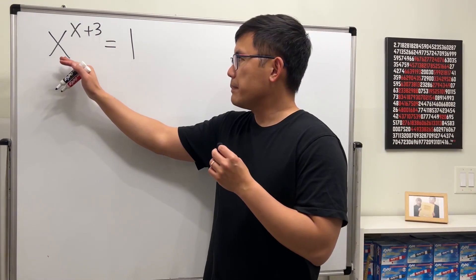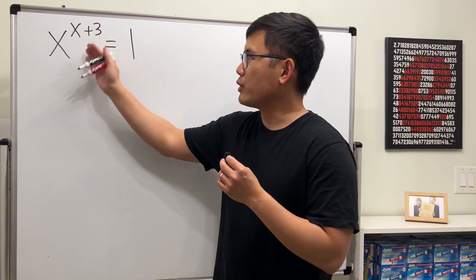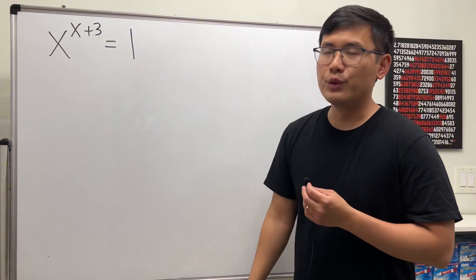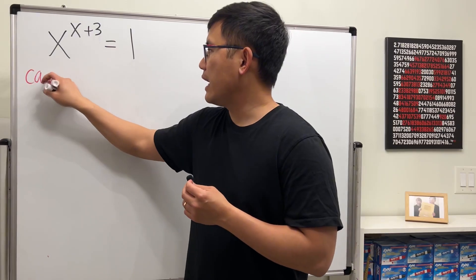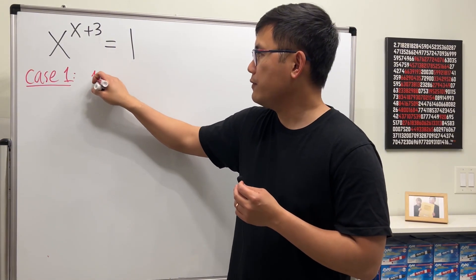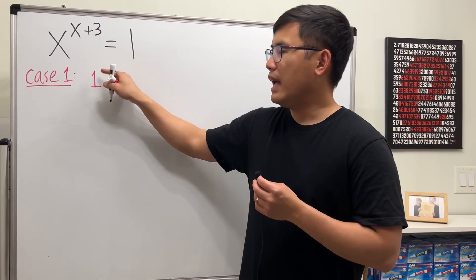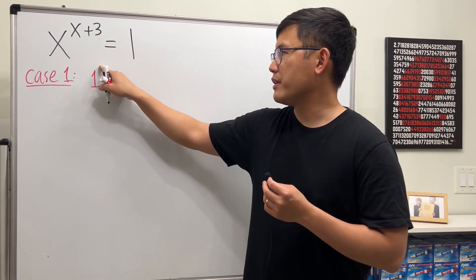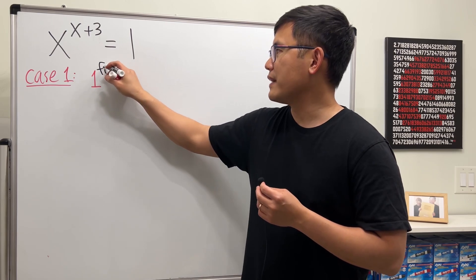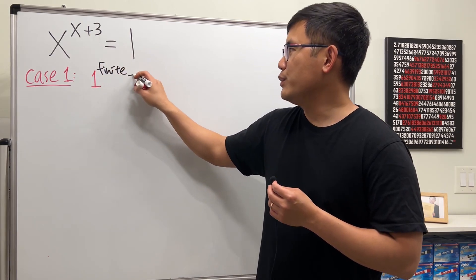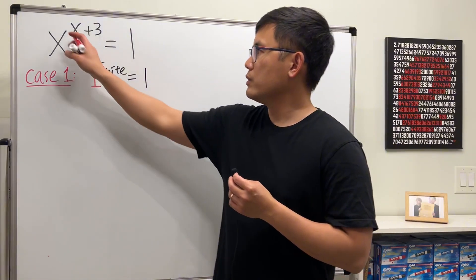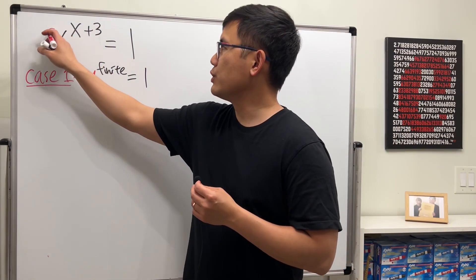So we have to think about how can we have an exponential end up with one. We have a few cases. Case 1 is when we have one for the base, and as long as you don't have infinity right here, anything finite will end up with one. Okay, so in that case here we have the base, it's just x, so that means x should be equal to one.